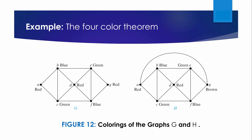Graph H is made up of graph G with an additional edge connecting A and G. Any attempt to color H using 3 colors must follow the same reasoning used for G, except at the last stage: when all vertices other than G have been colored, G is adjacent in H to vertices colored red, blue, and green, so a fourth color — say brown — is needed. Therefore H has a chromatic number equal to 4, and a coloring of H is shown in Figure 12.